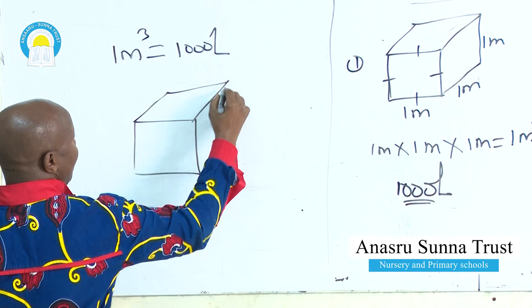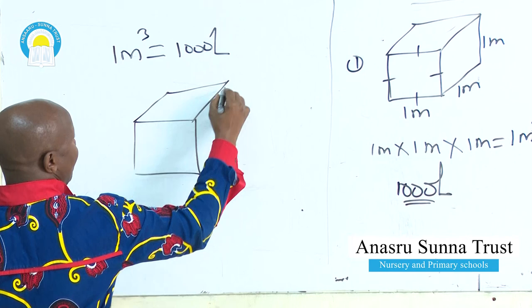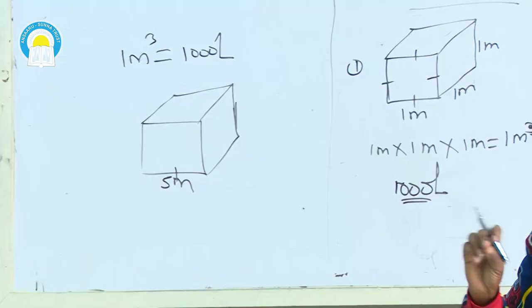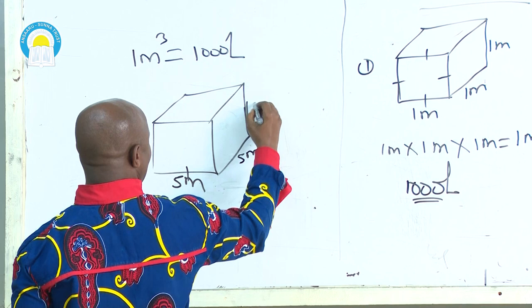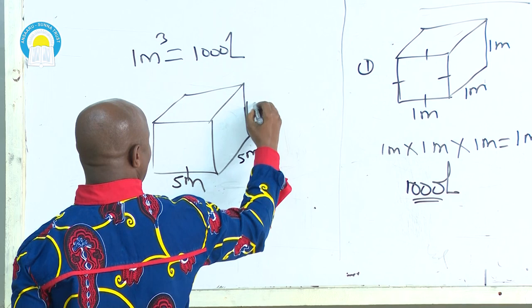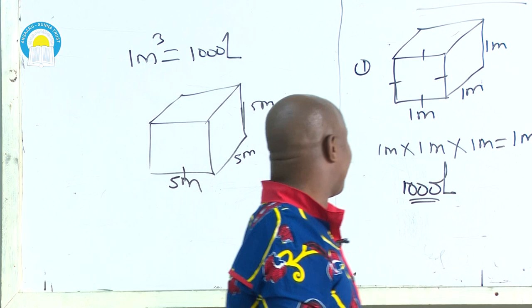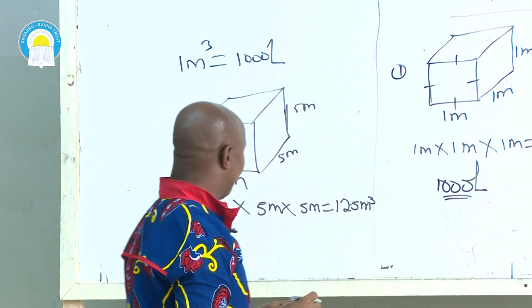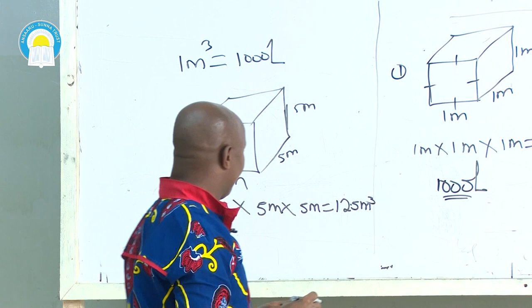Another example: you are given another cube. Let one side be 5 meters. If one side is 5 meters, definitely all the sides remain the same. So we have 5 meters by 5 meters by 5 meters. An examiner will only give you one side — you are the one to determine the other sides. So our volume is 5m × 5m × 5m, which is equivalent to 125 cubic meters.